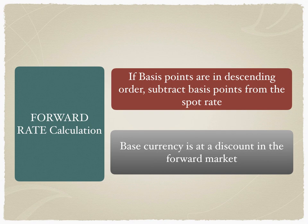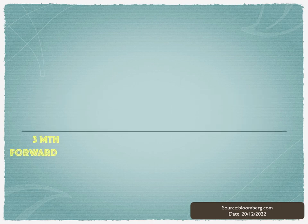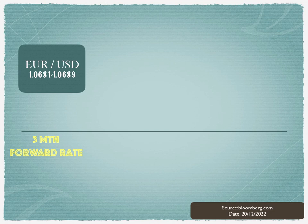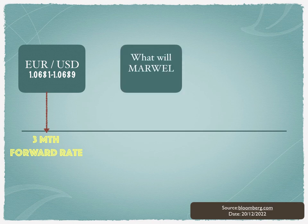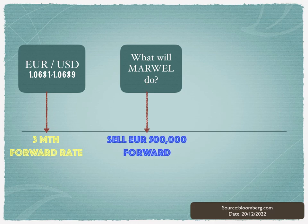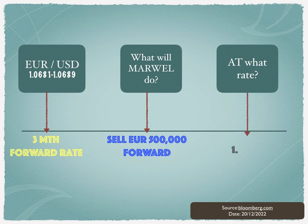These are the only calculations you need to remember for forward foreign exchange. Going back to Marvel Inc. — the three-month forward rate is 1.0681 / 1.0689. Marvel Inc. is a US-based company going to receive Euros, so they need to convert Euros into USD — meaning they will sell EUR in the market. As a price taker, Marvel Inc. can sell the EUR 500,000 forward at the bid rate of 1.0681.